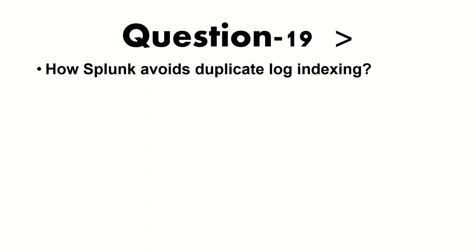How does Splunk avoid duplicate indexing? Splunk maintains a fishbucket, which is a record of all buckets in a specific directory. Splunk tracks whether each event has already been ingested. If you want to re-index data, you need to remove the fishbucket or delete the data from your index and restart the system so the data gets re-ingested.